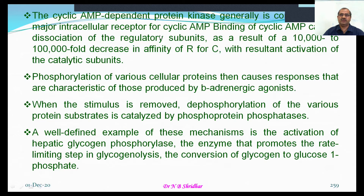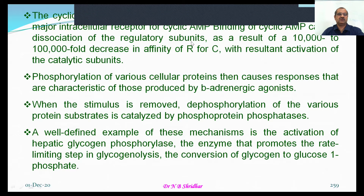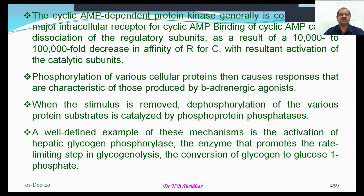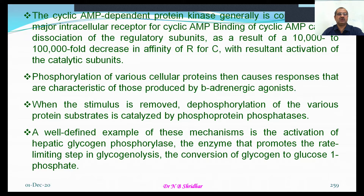The cyclic AMP-dependent protein kinase is the major intracellular receptor for cyclic AMP. Binding of cyclic AMP causes dissociation of regulatory subunits, resulting in a 10,000 to 100,000-fold decrease in affinity of the regulatory subunit for the catalytic subunit, with resultant activation of the catalytic subunit. This leads to phosphorylation of various cellular proteins, causing responses characteristic of those produced by beta-adrenergic agonists.